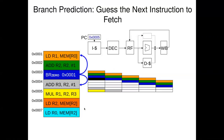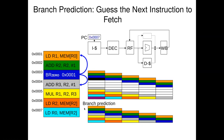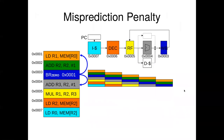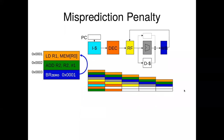We talked about branch prediction and went through an illustration where with branch prediction we could just guess that we always proceed to the next instruction — always assume we don't need to do a branch. In cases where our guess is correct, we eliminate any stalls — we speculate it's going to proceed on, and we were right, getting four cycles of improvement.